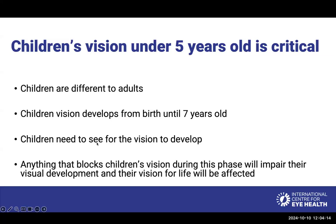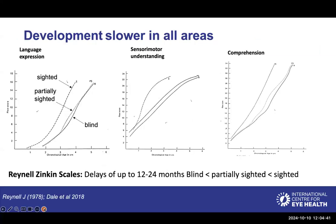Why are we focusing on this? Child health is so important, with children's vision under five years old being very critical. Children are extremely different to adults — vision is still developing from birth to seven years old, and children really need to be able to see in order for that vision to develop. Timing and timely diagnosis is critical. Delayed treatment can have a huge impact on every aspect of development, leading to worse vision, worse developmental outcomes overall, and in the case of retinoblastoma, can also lead to premature death.